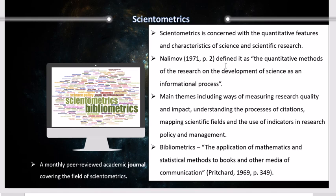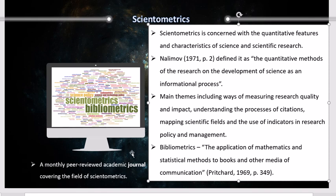Scientometrics is concerned with the quantitative features and characteristics of science and scientific research. In fact, it has been translated into the science of science. Nalimov defined it as the quantitative methods of research on the development of science as an informational process. Main themes in this field include ways of measuring research quality and impact, understanding the process of citations, mapping scientific fields — that's visualization — and the use of indicators in research policy and management.